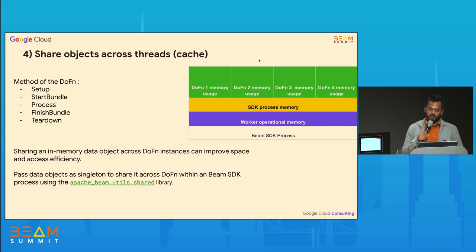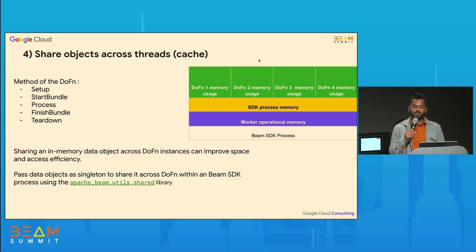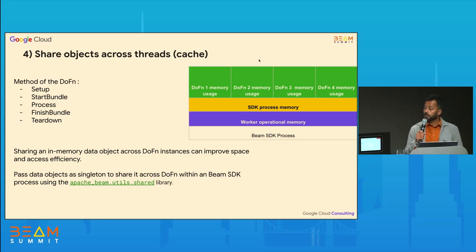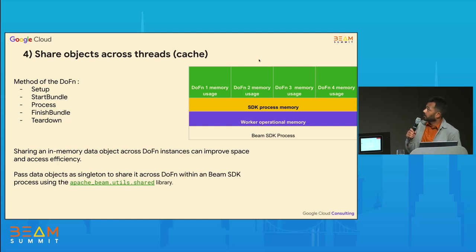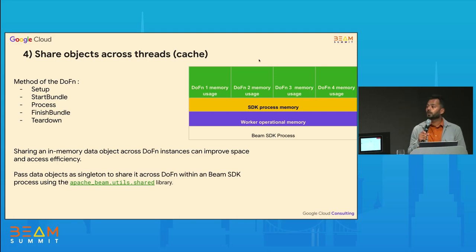The Python Beam SDK provides a library called the shared library that can be used to create singletons. These singletons are shared across the same SDK process. If you create a list within a DoFn, that list will be created for each DoFn — in this example, four copies. But if you create that list using the shared library, there will be just one copy, reducing the memory footprint by almost one-fourth.